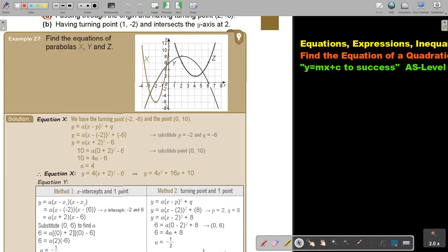So the best will be to use the turning point. Do you see that? Negative 2 and negative 6, and to use an extra point, and that point is 0 and 10. So then I substitute that, substitute the extra point, get a, simplify this, and this is my equation x.